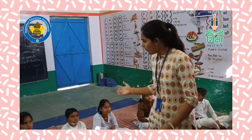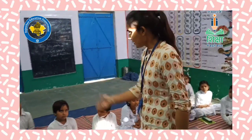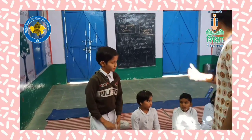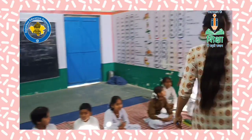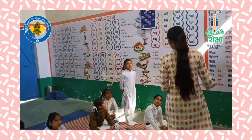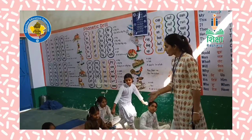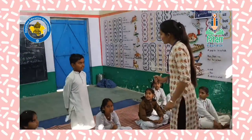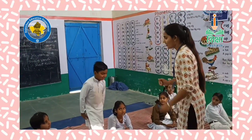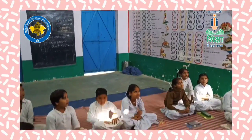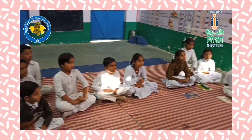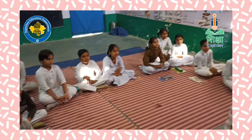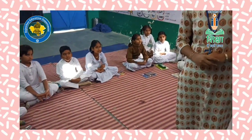First row is 'but' — that means boy. Second row is 'but' — that means girl. Boy and girl. Got it? Yes. Thank you very much.